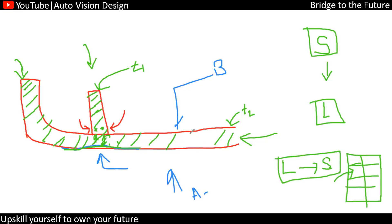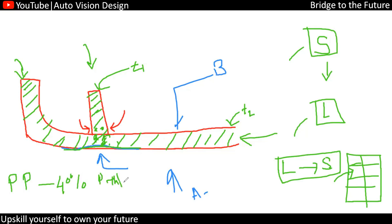Every plastic material reacts the same way; the only difference is that they have different ranges of shrinkage. Shrinkage is the property of expanding or contracting when changing from solid to liquid phase. For PP, we need to maintain 40% root thickness with respect to the part thickness. For ABS, the generic rule is 60% root thickness with respect to part thickness. So the range is 40 to 60 percent depending on the material.